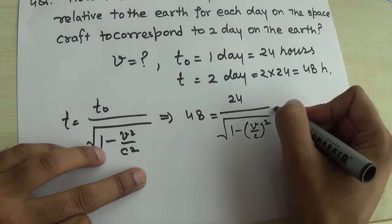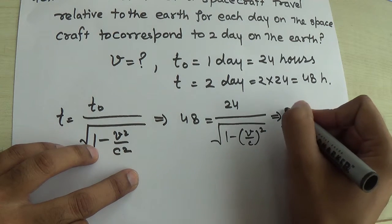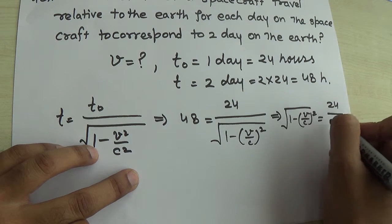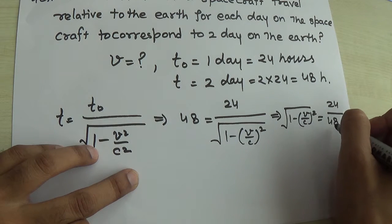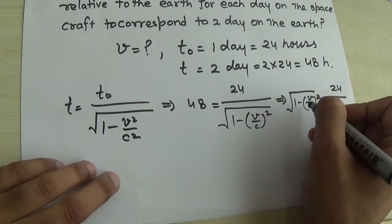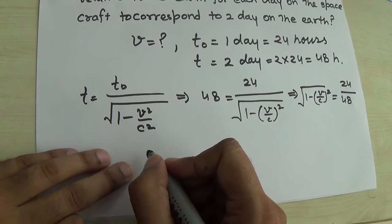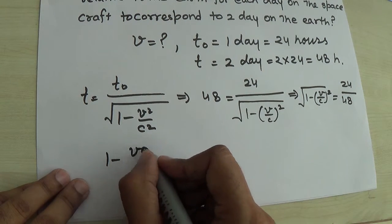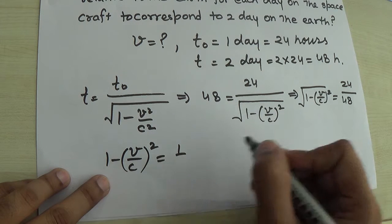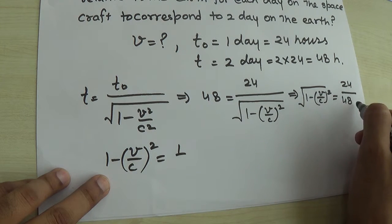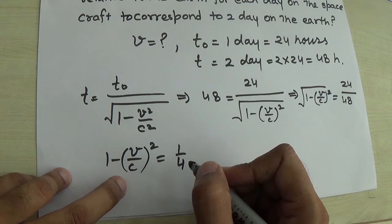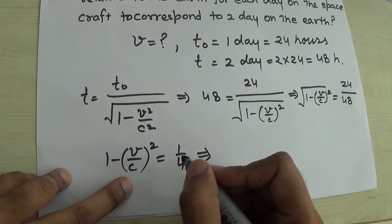Rearranging the terms: the square root of (1 minus V over C squared) equals 24 over 48, which simplifies to 1 over 2. Squaring both sides gives: 1 minus (V over C) squared equals 1 over 4, since (1/2) squared equals 1/4.